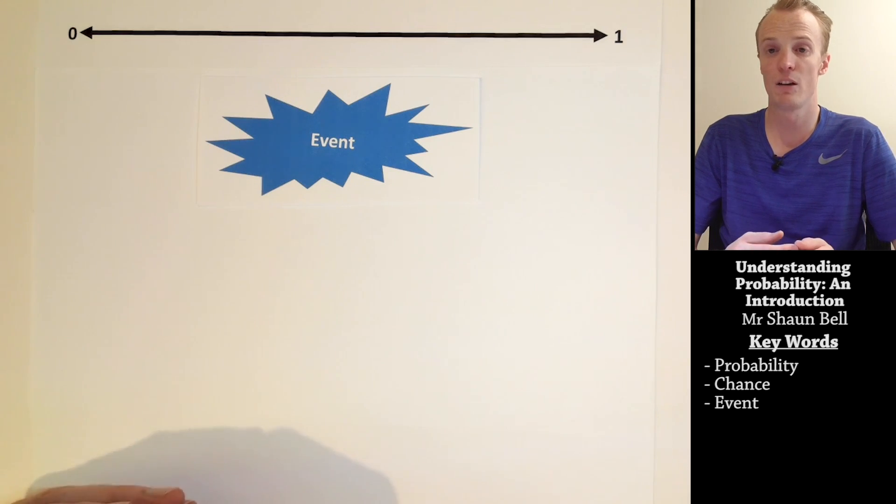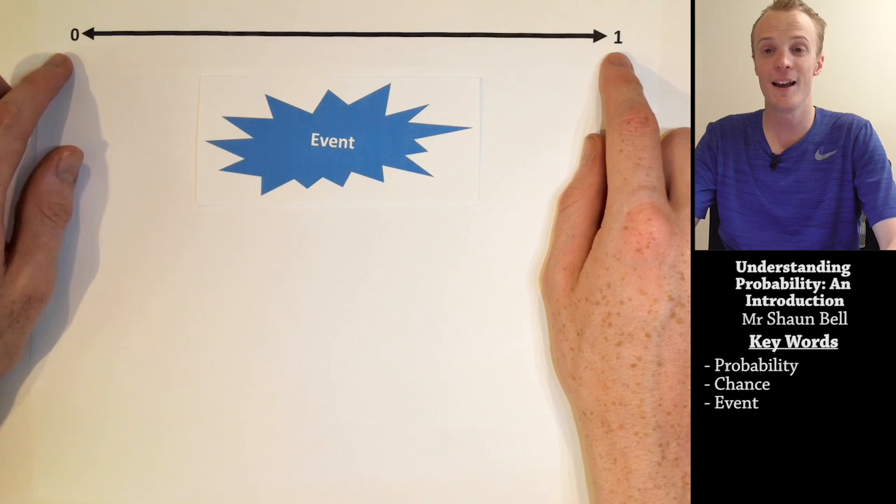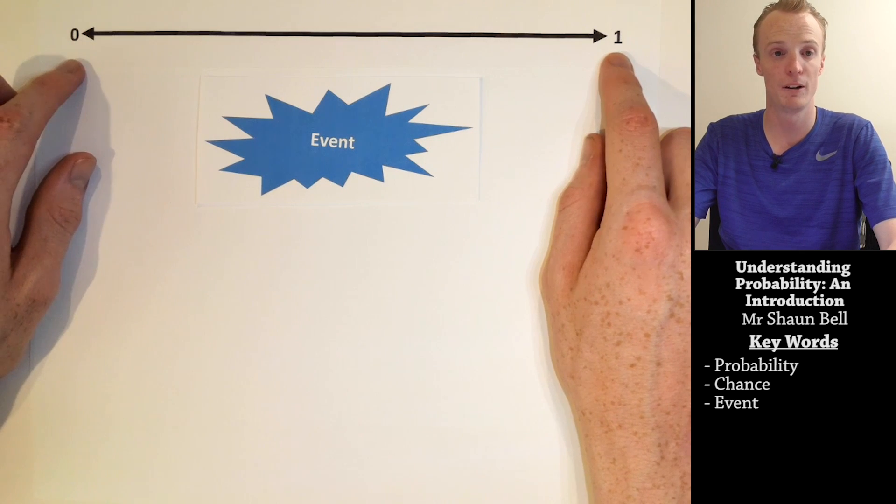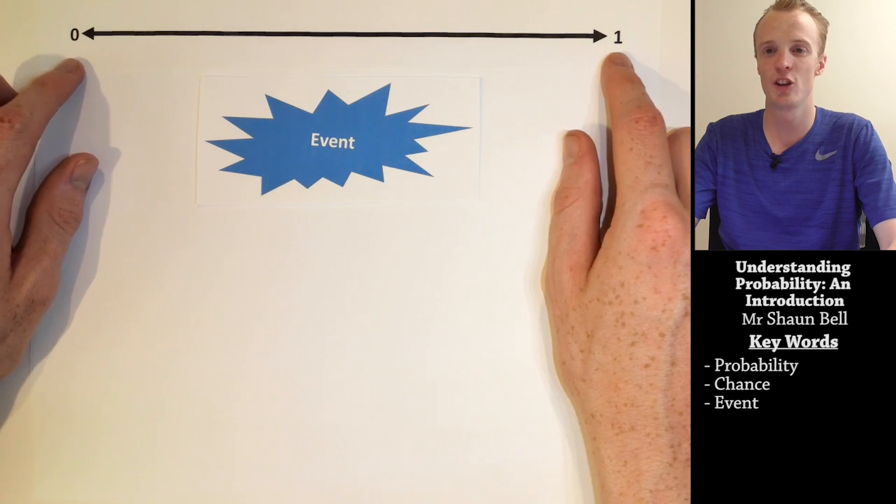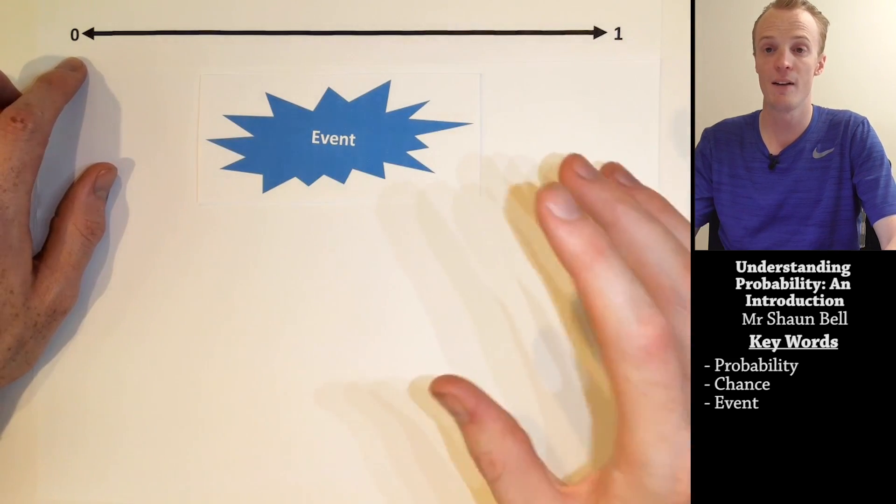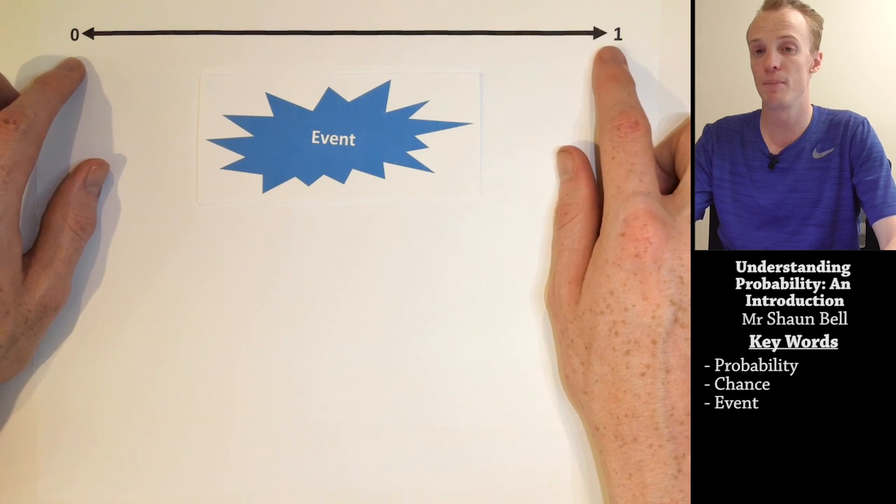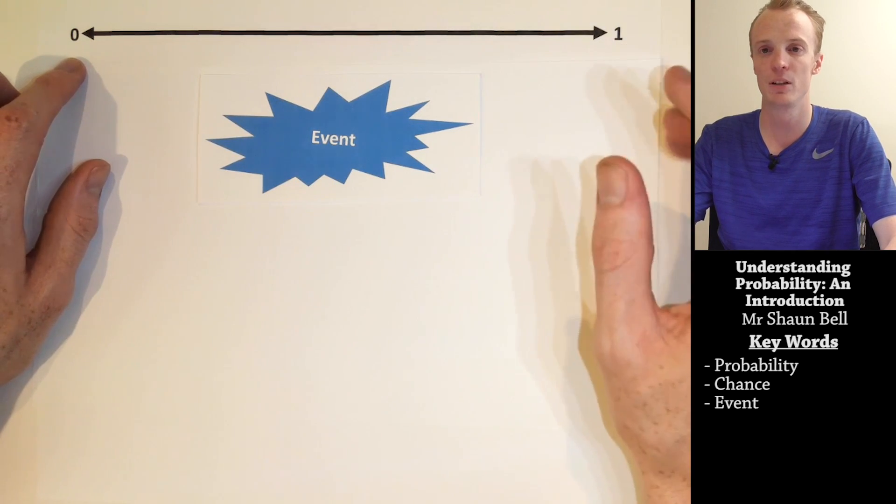The probability of an event occurring is the chance of that event occurring. The probability of events occurring range between 0 and 1. If we have an event probability of 0, that means that the chances of that event occurring are impossible. Whereas, if we have an event probability of 1, the chances of that probability occurring is absolutely certain.